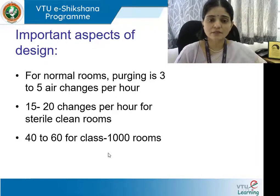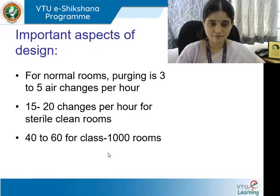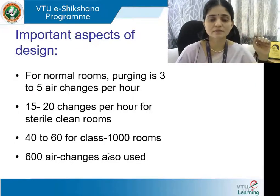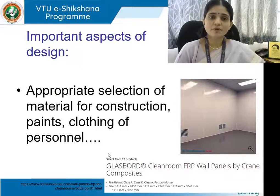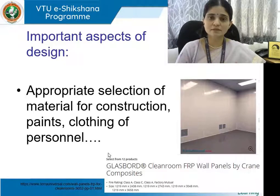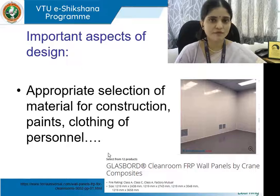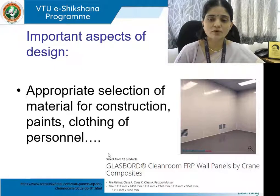For class 1000 rooms with very high cleanliness expectations, 40 to 60 air changes per hour are required. 600 air changes per hour are used in certain critically required clean rooms. Appropriate selection of materials for construction, paints, and clothing for personnel must all be methodologically in place. FRP wall panels, for example, are very smooth and unlikely to release residue or dust into the space — smooth surfaces are preferred over coarse ones.